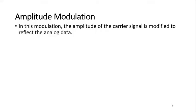In amplitude modulation, the amplitude of the carrier signal is modified to reflect the analog data.